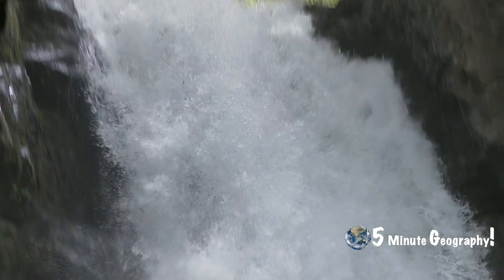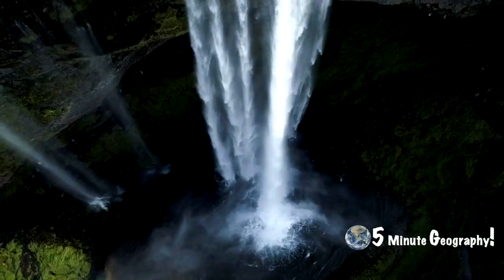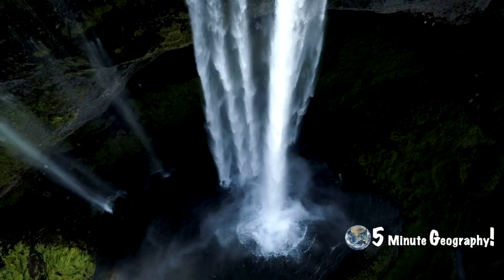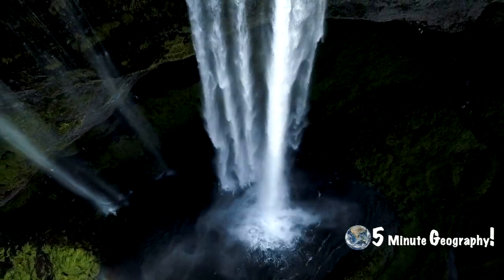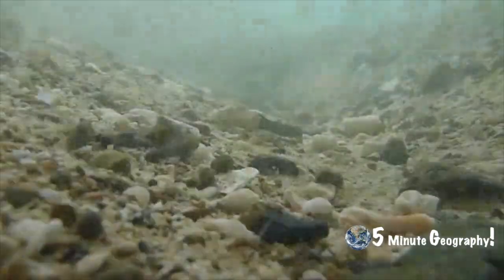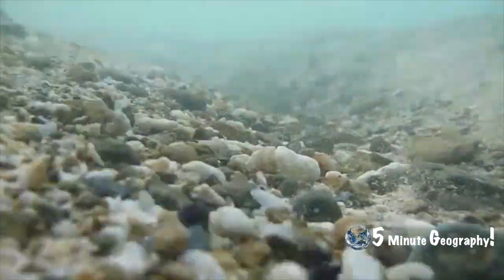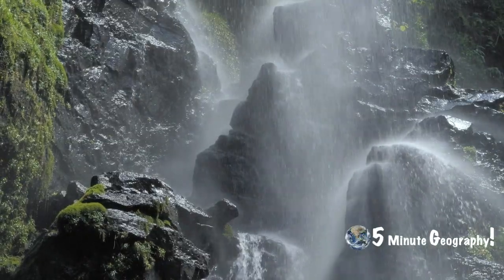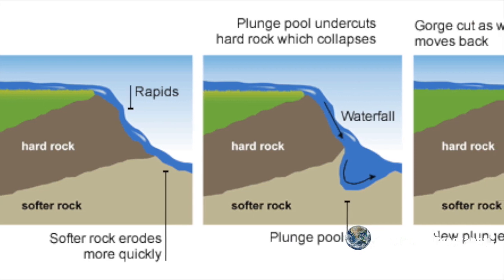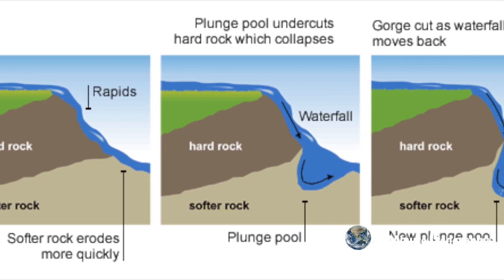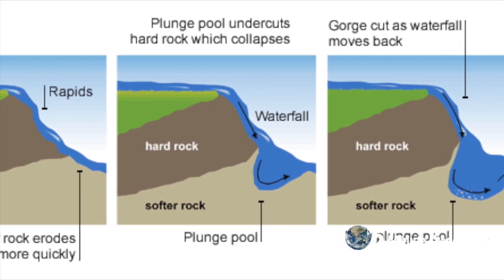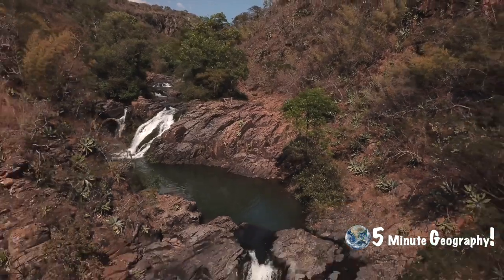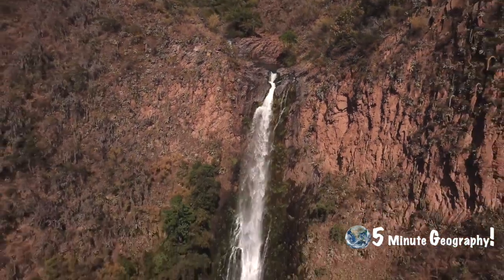Swirling water carves out hollows across the riverbed through hydraulic action — the force of the moving water. The process of abrasion increases the rate of erosion as broken rocks become trapped in these hollows, causing them to deepen and widen. Eventually these hollows spread across the river channel and form a vertical drop in the riverbed, which the river now plunges over.